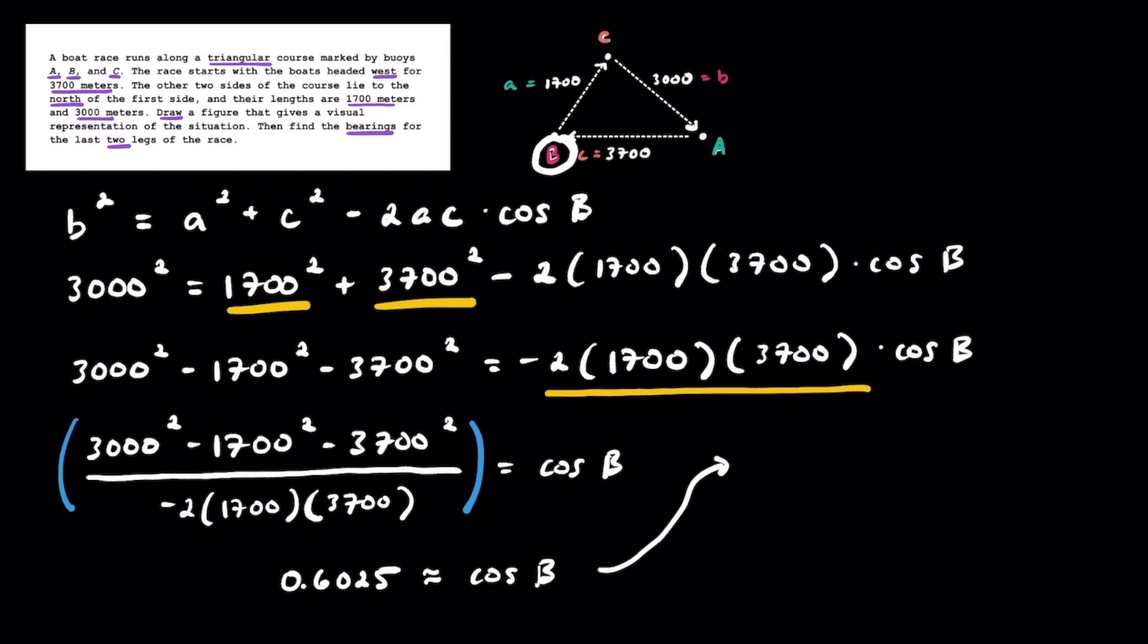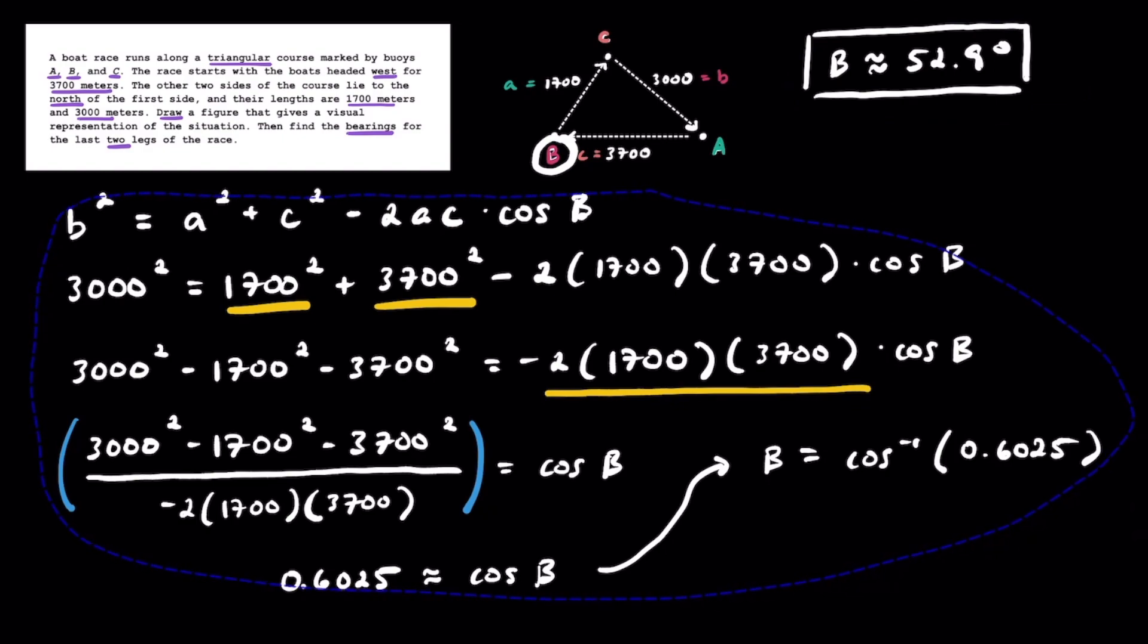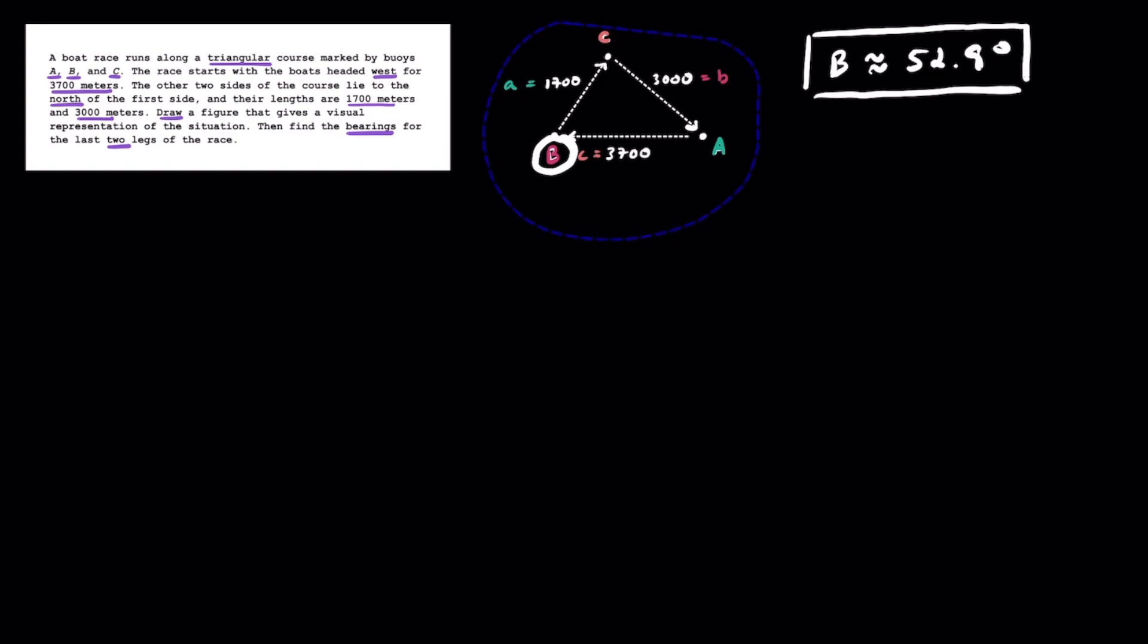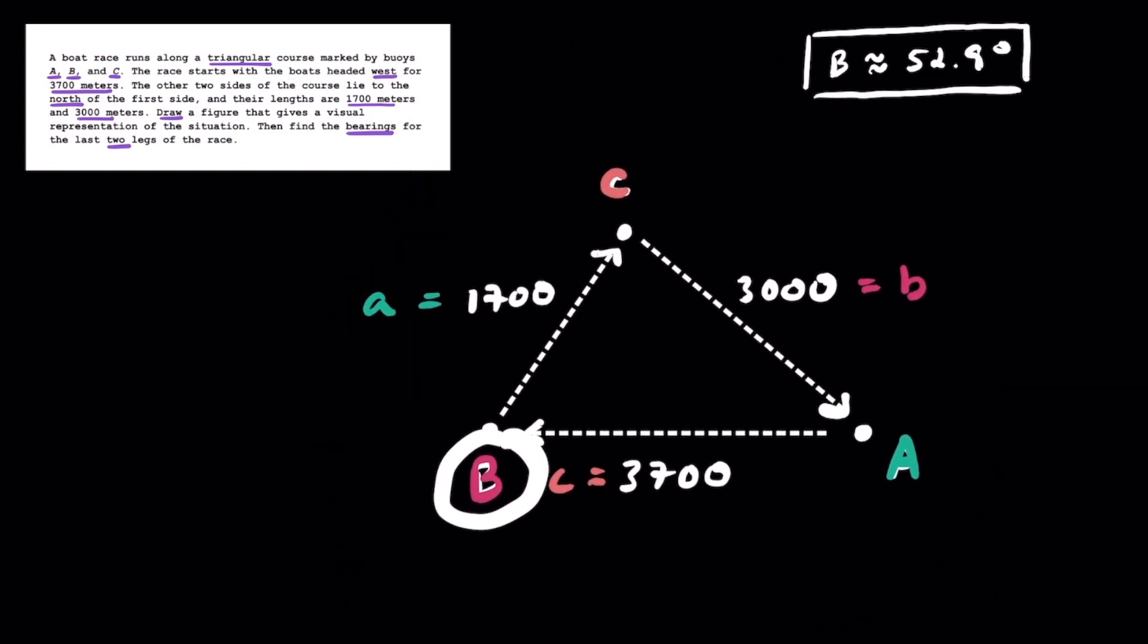Plugging this whole thing on the left into a calculator, we should get approximately 0.6025, and that's approximately equal to cosine of angle B. To find angle B, we're going to take the arc cosine of both sides. Plugging this into a calculator, we get that angle B is approximately equal to 52.9 degrees. So after all that work, we were able to find out this angle B, so I'm just going to box that and hold on to it.